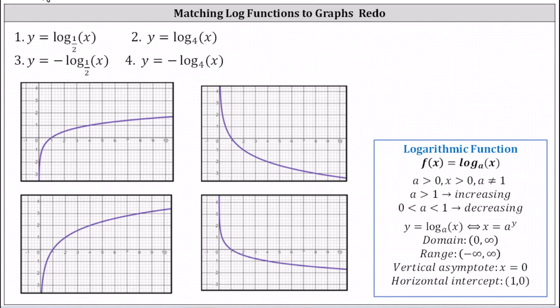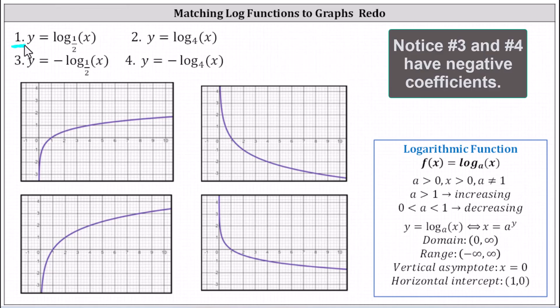We want to match the correct equation to the correct graph. Analyzing the four equations, notice only two of them are in the form of f of x equals log base a of x, which is number one and number two. When we have a function in this form, if a is greater than one, the function is increasing. If a is between zero and one, the function is decreasing.